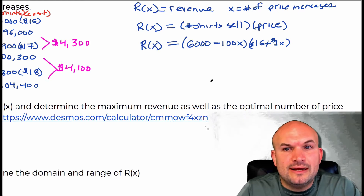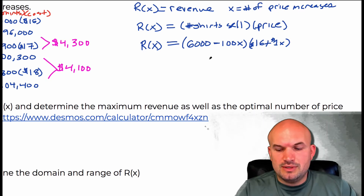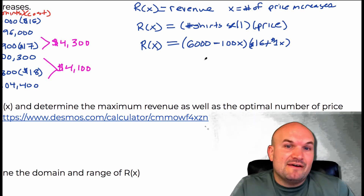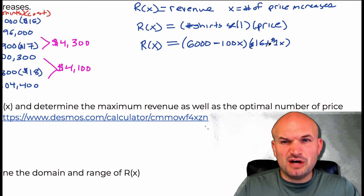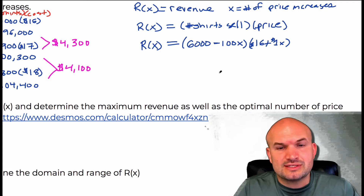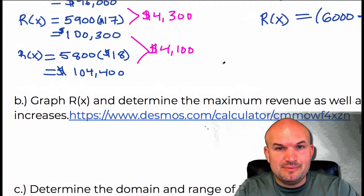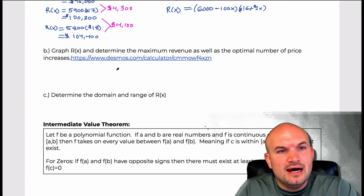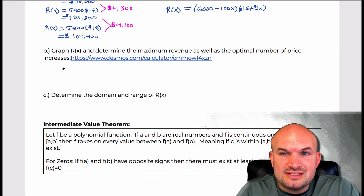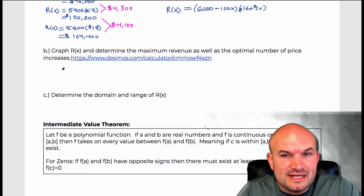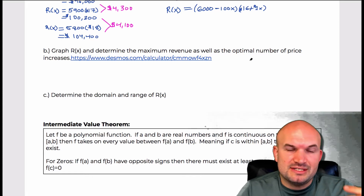You could multiply that out, but there's no real benefit to it. Obviously if you wanted to find the end behavior it might be a little helpful. So we can keep it in that format. The next part says: graph R of X and determine the maximum revenue as well as the optimal number of price increases.